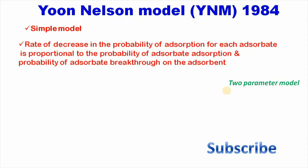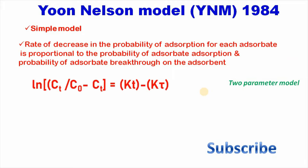The Yoon-Nelson model is a comparatively simple model and it assumes that the rate of decrease in the probability of adsorption for each adsorbate is proportional to the probability of adsorbate adsorption and probability of adsorbate breakthrough. The linear form of the Yoon-Nelson model can be written as: ln(Ct divided by C0 minus Ct) equals Kt minus K·tau.